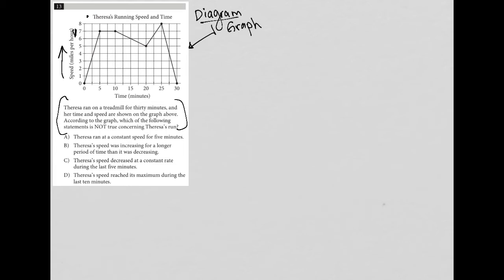So I always love to do that just to give myself 10 seconds or so to make sure I understand how to read the visual. So now the question actually says, Teresa ran on a treadmill for 30 minutes, and her time and speed are shown on the graph above. So we see that we go out to 30 minutes, and we know that her speed is on this y-axis with all these points representing speeds at different times.